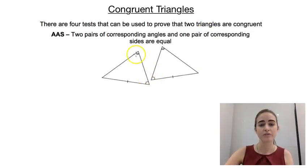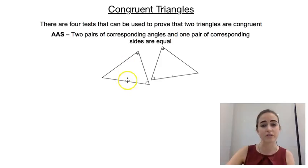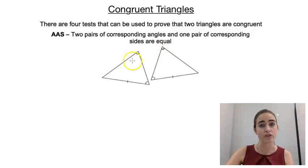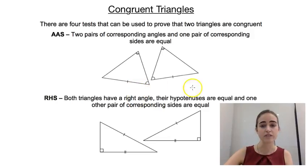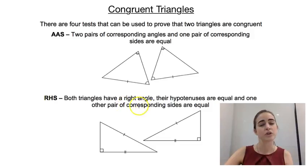For AAS, we've got two equal angles — this one matches this one, and this one corresponds to this one — and then one matching side equal as well. This side, which is opposite one angle, is the same length as the corresponding side opposite the matching angle in the other triangle. Our last test is called the RHS test: right angle, hypotenuse, side. Both triangles must be right-angled, their hypotenuses are equal, and one other corresponding side is equal.